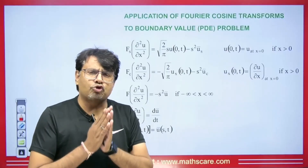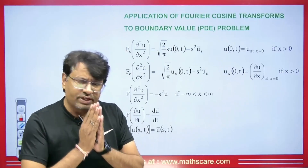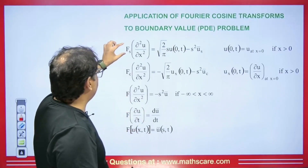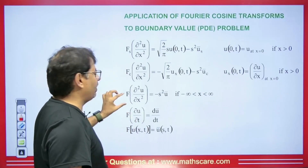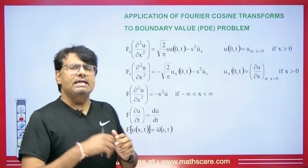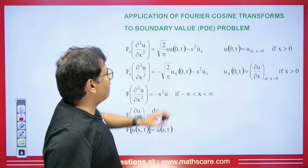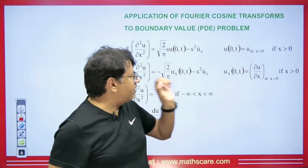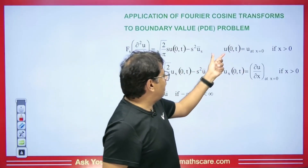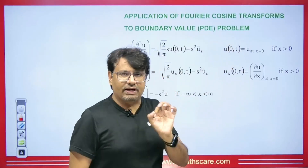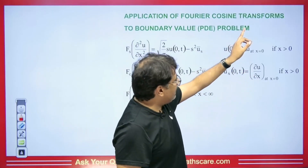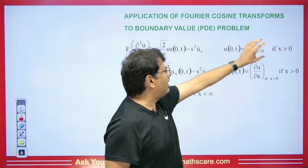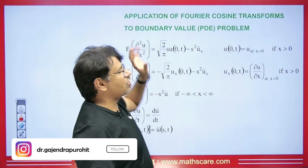If we have any partial differential equation, how do we decide whether to use the Fourier sine transform, Fourier cosine transform, or just the Fourier transform? There are conditions given to us for solving the partial differential equation. If we are given u(0,t), that is u at x equal to 0 with x greater than 0, in that case we will apply the Fourier sine transform.